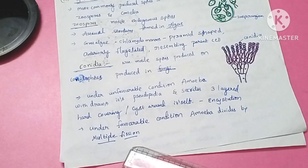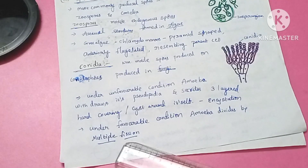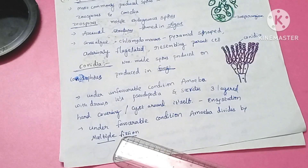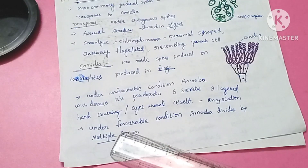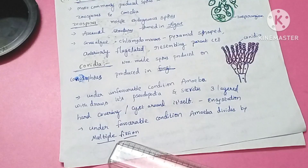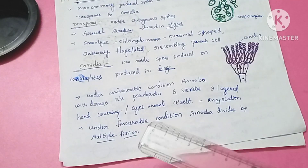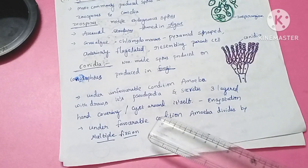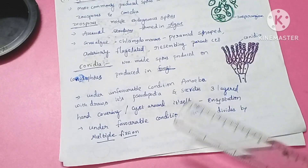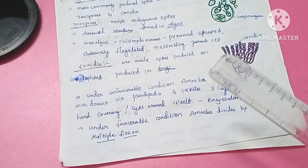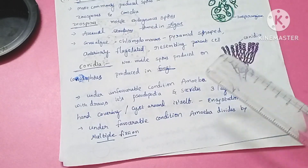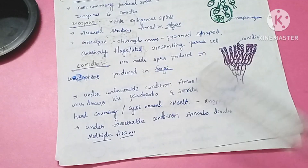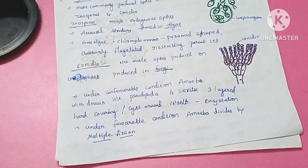Under favorable conditions, the amoeba divides through multiple fission. In binary fission, one cell divides into two cells, but in multiple fission, many daughter cells are formed from one parent cell. The nucleus divides repeatedly, producing a number of nuclei, and the amoeba produces many daughter cells. So encystation occurs in amoeba.